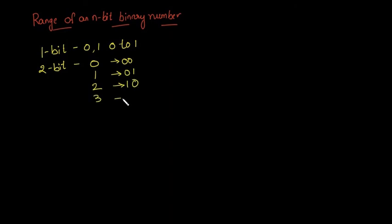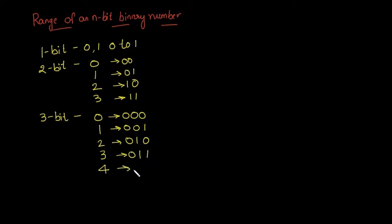...and 3 as 11. A 3-bit binary number can represent: 0 as 000, 1 as 001, 2 as 010, 3 as 011, 4 as 100, 5 as 101, 6 as 110, and 7 as 111. So as we increase the number of bits, the range also increases.